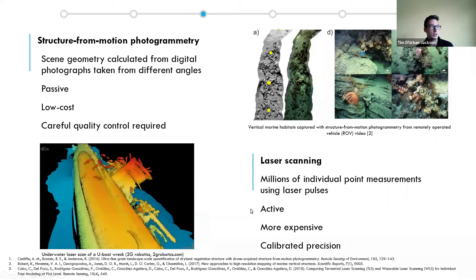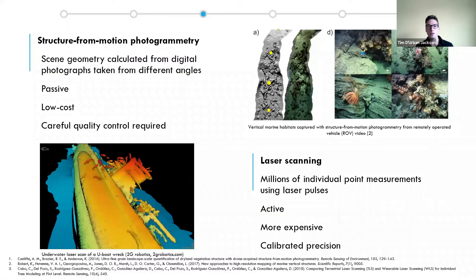Even underwater laser scanners are being developed. One advantage of laser scanning over structure from motion photogrammetry is that it provides inherent accuracy and precision, so you can be more confident that walking away from your field site you've captured an accurate model of what you're interested in.